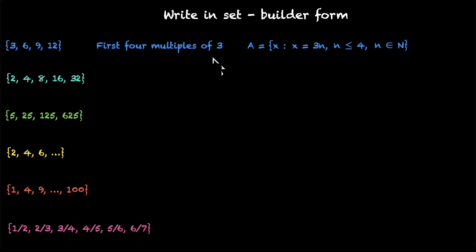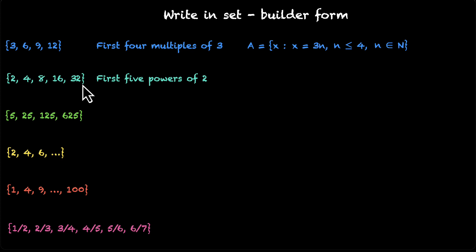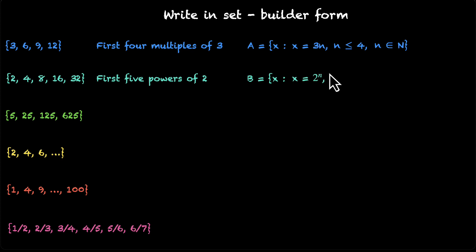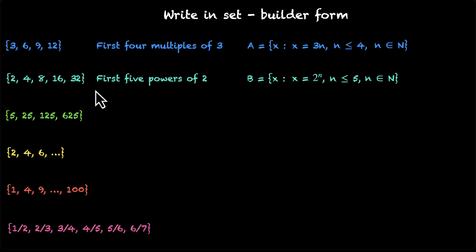Let's look at the next one: 2, 4, 8, 16, 32. These are the first 5 powers of 2 — 2 to the power 1 is 2, 2 squared is 4, 2 cubed is 8, 2 to the power 4 is 16, and 2 to the power 5 is 32. So how do we write this? For multiples we use multiplication, like 3 times n, but for powers we will use 2 to the power n. So we are looking for all x such that x equals 2 to the power n, where n is less than or equal to 5 and n belongs to natural numbers. This is how you write this in the set builder form.